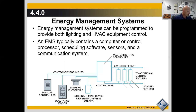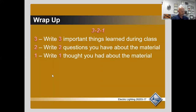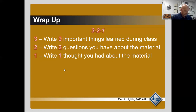Modern buildings use energy management systems (EMS) to economically control the amount of energy consumed by lighting circuits and HVAC equipment — that's a test question. An EMS typically consists of a computer or control processor, energy management and scheduling software, sensors and controls located where needed, and in large systems, communication networks. Please do the section review questions on page 55, the end-of-module review questions, and the supplemental exercises. Read all trade terms in this module.